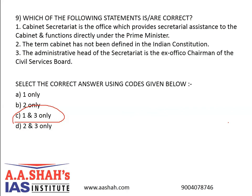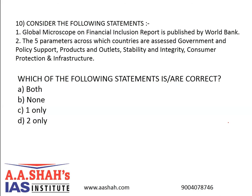Question 10. Consider the following statements: the Global Microscope and Financial Inclusion Report is published by the World Bank. The parameters across which countries are assessed are government and policy support, products and outlets, stability and integrity, consumer protection, and infrastructure. Which of the following is correct? a. Both, b. None, c. 1 only, d. 2 only. The correct answer is D, 2 only. The first statement is incorrect because the Global Microscope and Financial Inclusion Report is published by the Economist Intelligence Unit, the research and analysis division of the Economist Group.